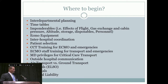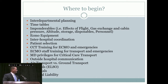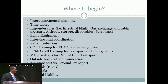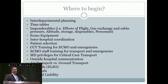We started having interdepartmental planning meetings, setting timetables, and discussing imponderables. We have a very busy and well-structured critical care transport team that was very helpful. We talked about the effects of flight, gas exchange, and cabin pressure altitude. We discussed where to store disposables, how many personnel we could take, and how to best use ECMO equipment in ground or air transport. We also addressed hospital coordination, patient selection, and training — teaching the critical care transport team about ECMO, including emergency procedures.